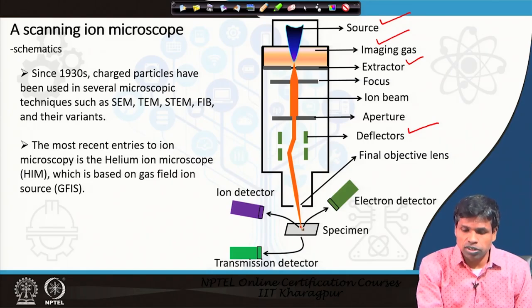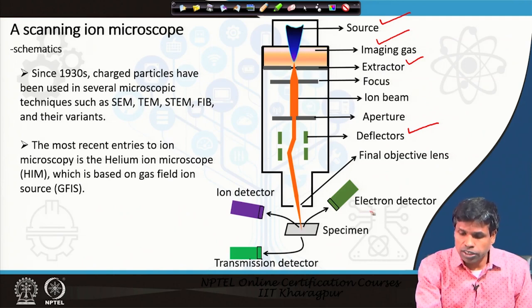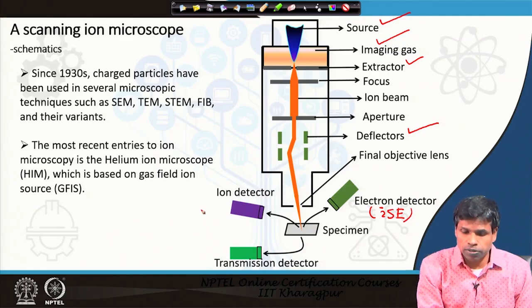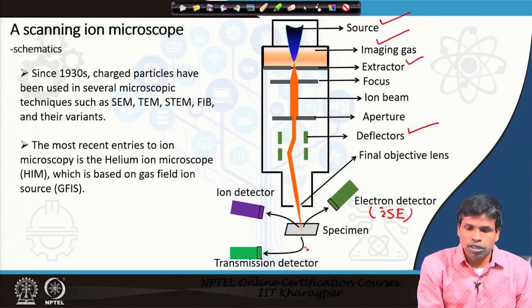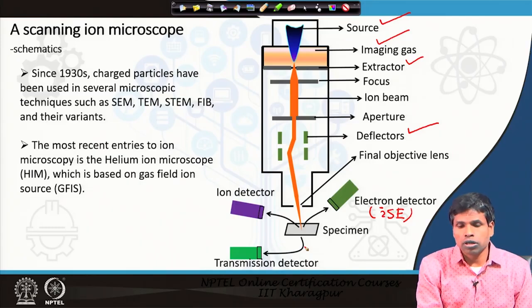Once the beam is incident on the specimen, we have an electron detector (ISE), a backscattered ion detector (BES), and we can also have a transmission detector, which we may discuss later. This is the typical schematic of the helium ion microscope.